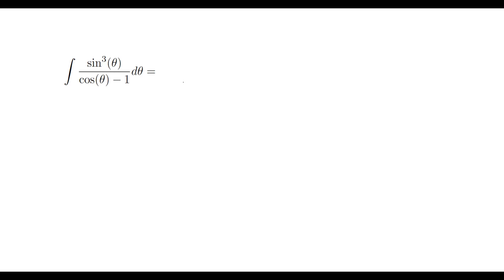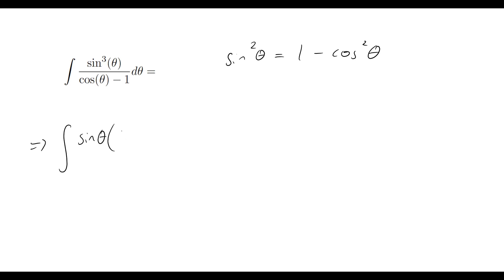First things first, what we need to do is try and get rid of that sine cubed, because we really don't like working with any trig function to that degree. So what we can do is use the fact that sine squared theta equals 1 minus cos squared theta, which comes from the identity sine squared theta plus cos squared theta equals 1. That's going to let us rewrite this as the integral of sine theta times 1 minus cos squared theta, all over cos theta minus 1, d theta.